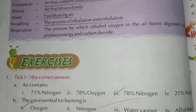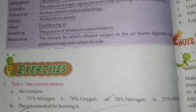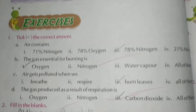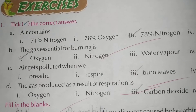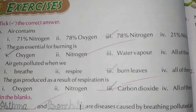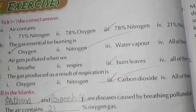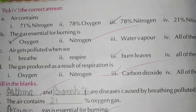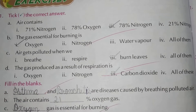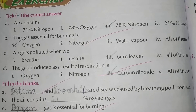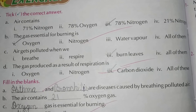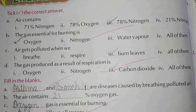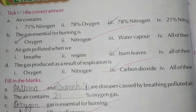Revise for 5 minutes. Next, we will start back exercises. Number 1, tick the correct answer. Air contains 78% nitrogen — 78% nitrogen is the right answer. Tick 78% nitrogen.